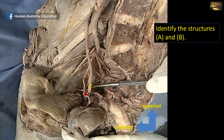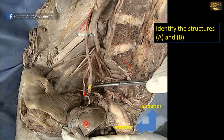Identify the structures A and B. This is a sagittal section of a female pelvis. You can see the fundus of the uterus here; the sacrum is located posteriorly. If we follow structure A upwards, it comes from the abdomen. It crosses the pelvic brim at the bifurcation of the common iliac into external and internal iliac arteries, then goes straight down into the pelvis and passes forwards to open into the urinary bladder. Structure A is the ureter.